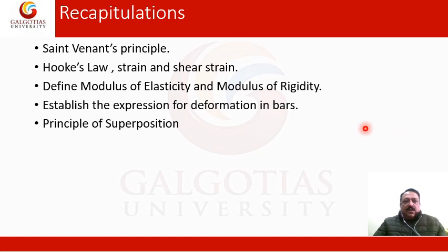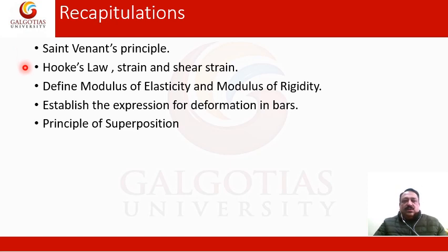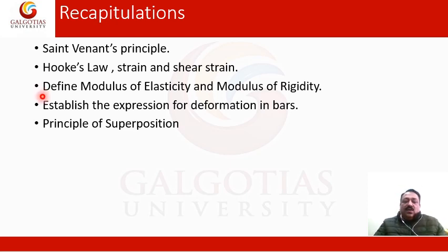Recapitulations. First we will discuss what we have covered in the previous lecture. In the previous lecture, we first studied St. Venant's principle, then we studied Hooke's law, strain and shear strain. We defined modulus of elasticity and modulus of rigidity. We established the expression for simple deformation in a bar. And lastly, for bars of varying cross-section, we discussed the principle of superposition and how it can be applied to numerical problems.